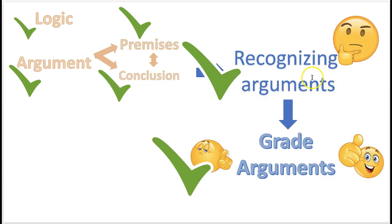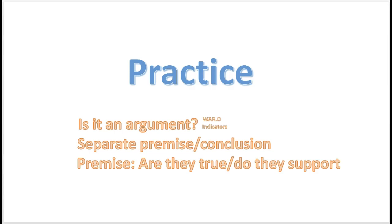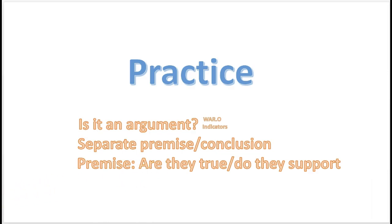You also know what non-arguments are: warning, advice, report, or opinion. You know how to grade arguments. First step: separate the premise and the conclusion, then zero in on the premise. Ask yourself: are the premises true, and do they support the conclusion? Now it's time to practice. I know this is a lot to remember, but in time you'll have it down no problem. Here's a key to help you: first, find out if it's an argument. Next, separate the premise and conclusion, then focus on the premise — are they true, and do they support the conclusion? Ready? Let us begin.